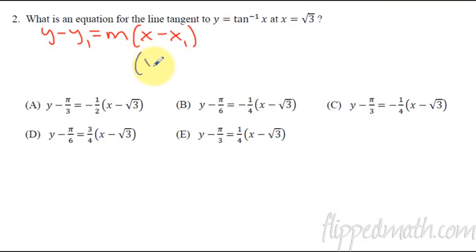So they already give us what our x value is. So right here it's going to be x minus the square root of 3 equals, over here we have y minus. So this is the answer, we've just got to fill in the m and the y value. Maybe can we narrow anything down? x minus the square root of 3. They're all x minus the square root of 3, so that doesn't help us narrow anything down.